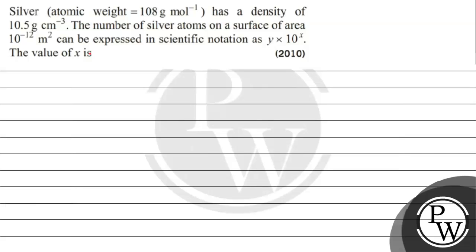Let's read this question. The question says: silver, atomic weight 108 gram per mole, has a density of 10.5 gram per centimeter cube. The number of silver atoms on a surface of area 10 raised to the power minus 12 meter squared can be expressed in scientific notation as y into 10 raised to the power x. The value of x is?